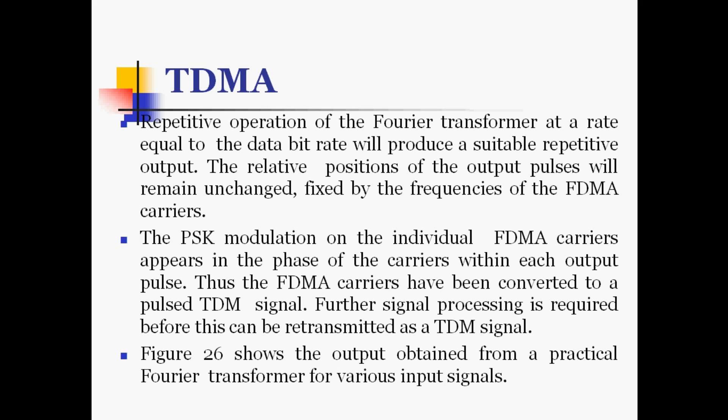Repetitive operation of the Fourier transformer at a rate equal to the data bit rate will produce a suitable repetitive output. The relative positions of the output pulses remain unchanged, fixed by the frequencies of the FDMA carriers. The PSK modulation on individual FDMA carriers appears in the phase of the carriers within each output pulse. Thus the FDMA carriers have been converted to a pulse TDM signal, and further signal processing is required before retransmission as a TDM signal.